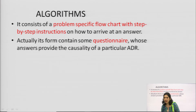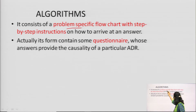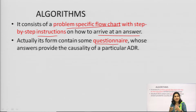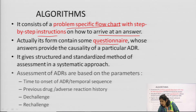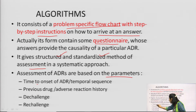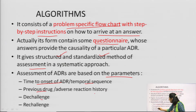The second method of causality assessment is the algorithm. It is a problem-specific flowchart with step-by-step instructions on how to arrive at an answer. Its form contains questionnaires, and based on the answers, we can determine whether a particular drug is causing the ADR. It is a structured, standardized method of assessment, and assessments are based on parameters such as time to onset of ADR (temporal sequence), previous drug reaction history, de-challenge, and re-challenge.